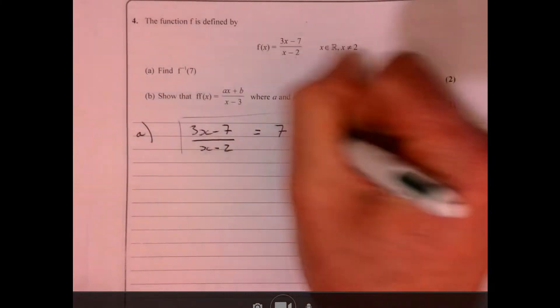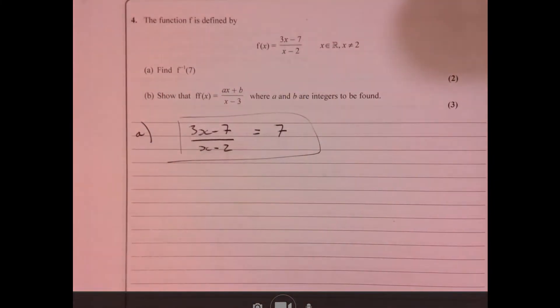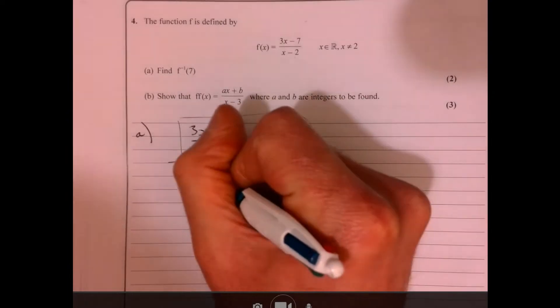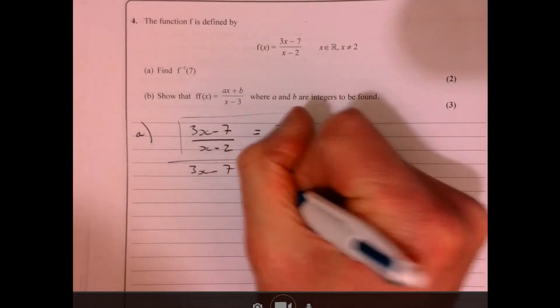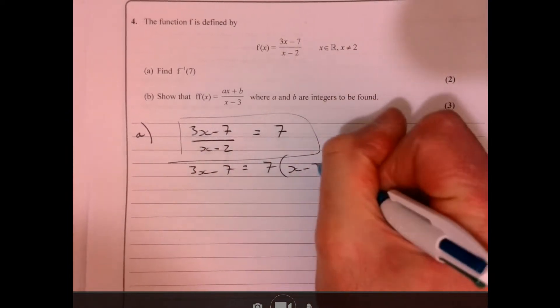So if you know that, you can just write down that part, OK? And then you can quickly solve it. So 3x minus 7 equals 7x minus 2.